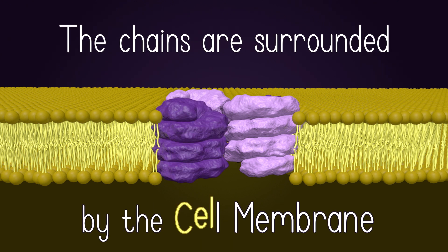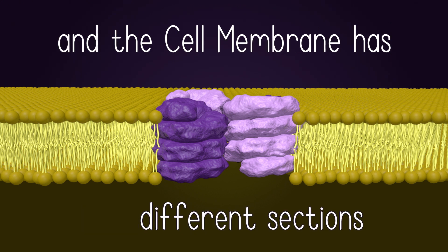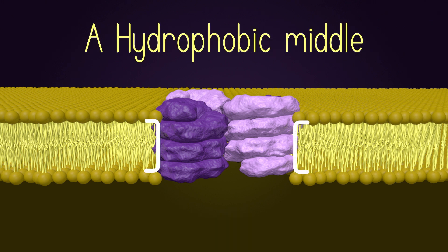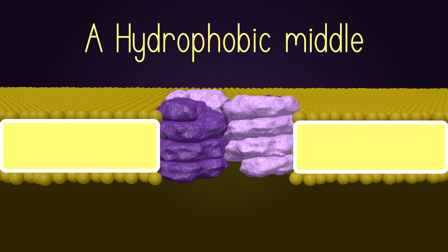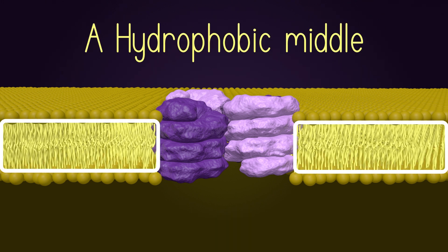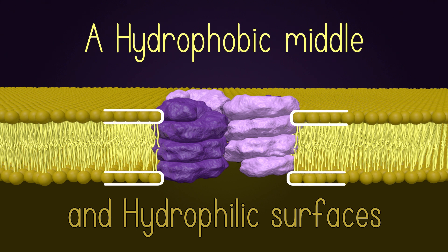The chains are surrounded by the cell membrane, and the cell membrane has two different sections: a hydrophobic middle, and hydrophilic surfaces.